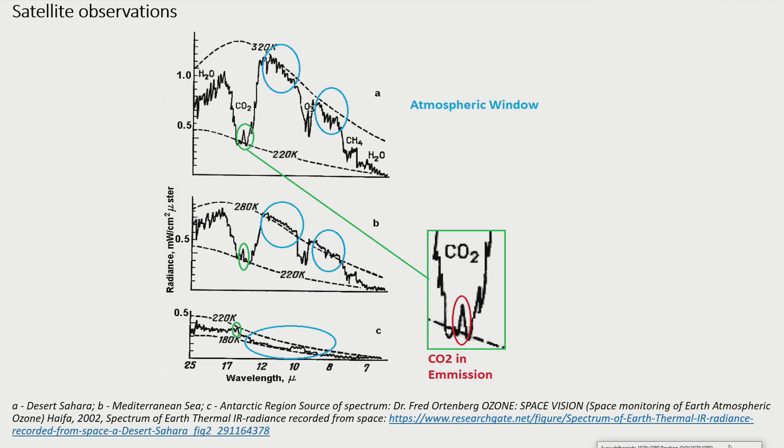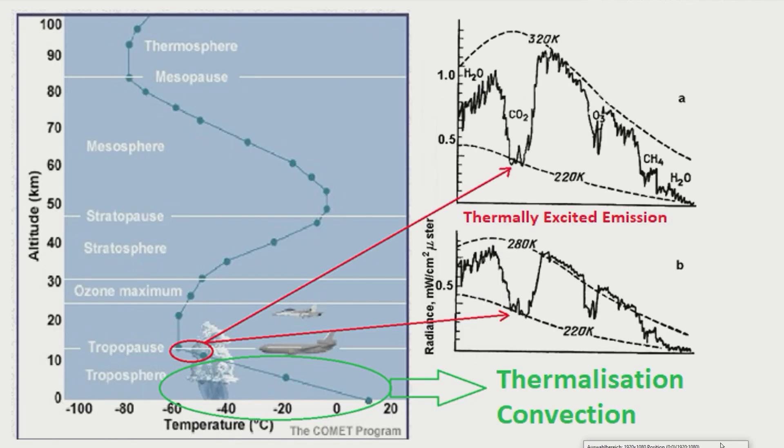The immediate thermalization of the excited states in the lower atmosphere also explains why it is so difficult to really measure the postulated 324 Watt per square meter of back radiation. Furthermore, the often close to linear temperature gradient of the troposphere indicates that cooling occurs here, in accordance with the work done during the ascent of air masses.